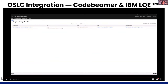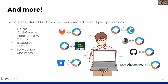We have not only created integrations for GitLab, Code Beamer, and Jira. The Coatl-generated OSLC APIs have been created for multiple applications, including GitHub, Bitbucket, TestRail, ServiceNow, and other tools as well.